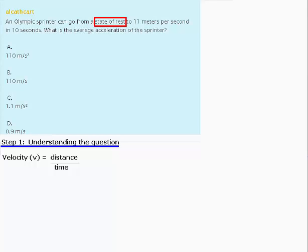In the case of 11 meters per second, it tells us that for every second that passes by, the Olympic sprinter would have traveled 11 meters. Now that we understand velocity, we can go on to try and understand acceleration.